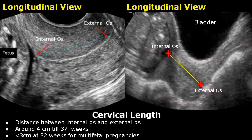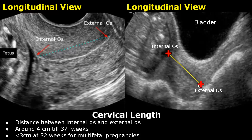This is a transabdominal view. Cervical length can also be taken in a transabdominal view, but it is not accurate because the full bladder often leads to an increased value of cervical length. This is the internal os, right here — one caliper is placed here. And this is the external os — the other caliper is placed here.